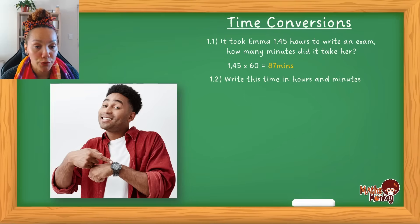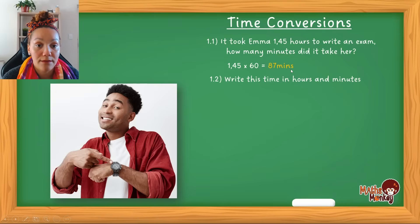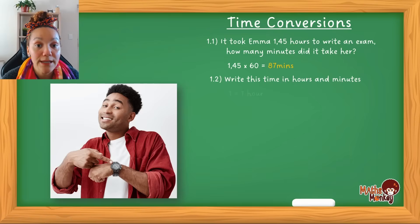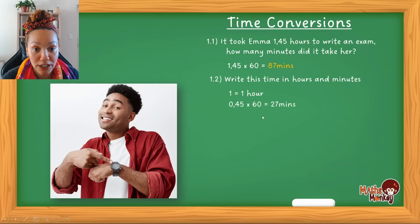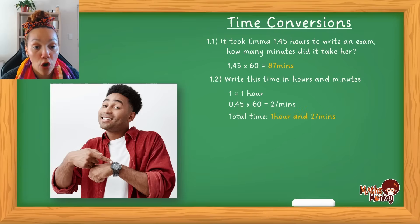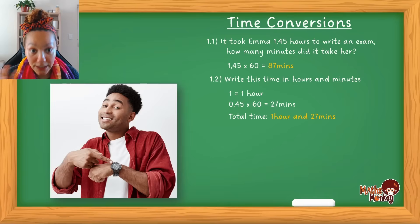Question 1.2: write this time in hours and minutes. You can see that 60 of those 87 minutes makes one hour, leaving 27 minutes — so one hour and 27 minutes. Alternatively, the digit before the decimal represents hours, so you have 1 hour, and then you convert the 0.45 to minutes, giving 27 minutes. The answer is one hour and 27 minutes.